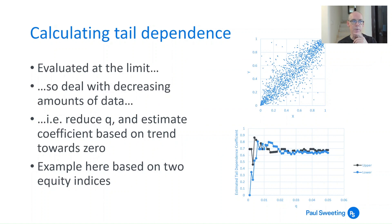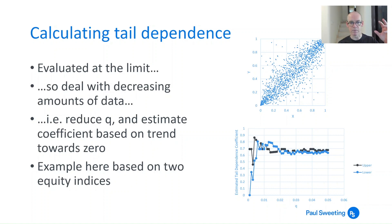How do you calculate tail dependence from data? It's evaluated at the limit, so you have to work it out based on decreasing amounts of data. You can calculate the value of the copula divided by the quantile, and just keep reducing q to see what happens. I've done this for a couple of equity indices, and you can see that the number stays fairly constant for upper and lower tail dependence at around 0.6 to 0.7. Then as you reduce q lower and lower, the values start to climb slightly towards 0.7 to 0.8, before going all over the place and dropping off because there's not enough data. That suggests the coefficient of lower and upper tail dependence for this dataset is probably around the 0.7 to 0.8 mark.